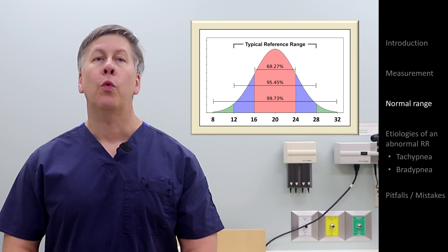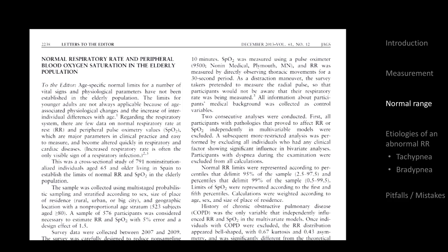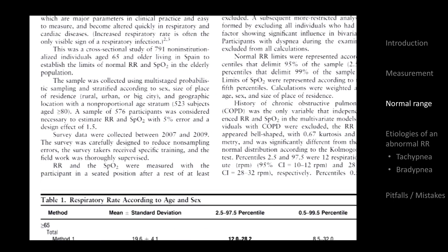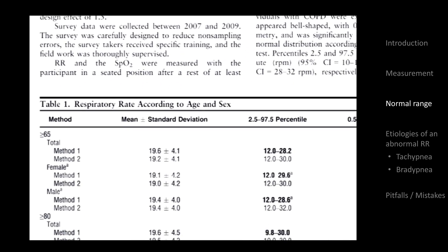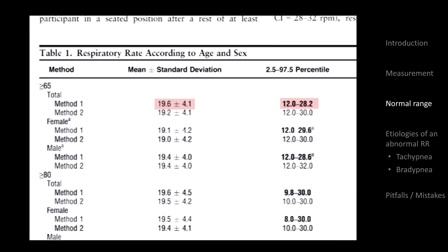We also have a 2013 research letter that discusses a study of 791 elderly non-institutionalized patients in which the exact same range of 12 to 28 included 95% of those without chronic cardiopulmonary disease.